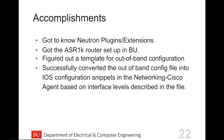Now I'd like to talk on the accomplishments of our project. First, we got to know Neutron, its plugins and extensions. We familiarized ourselves with the ASR1K and got it set up at BU. We figured out a template for the out-of-band configuration file to inject into the Cisco config agent. Lastly, we successfully converted the out-of-band configuration file into iOS configuration snippets in the networking Cisco agent, and based on the interface levels described in the file, we're able to push to the ASR1K.